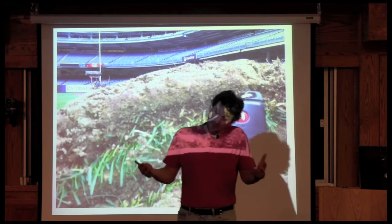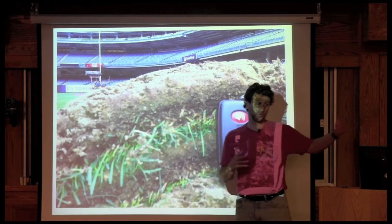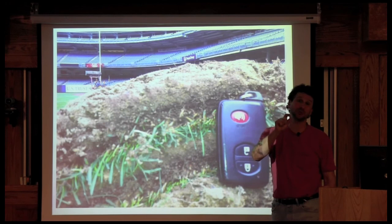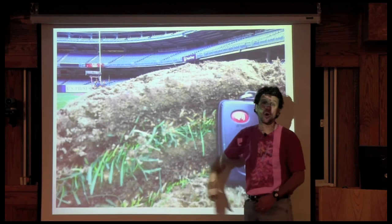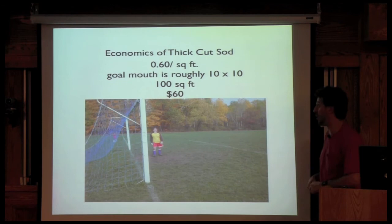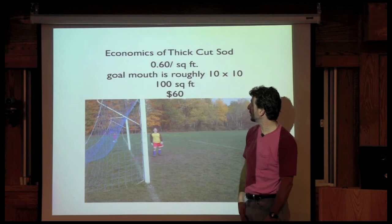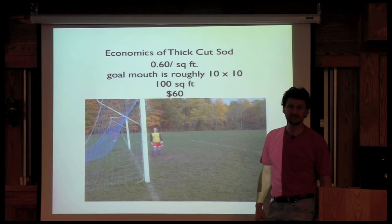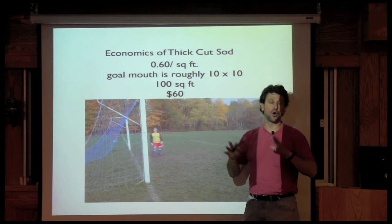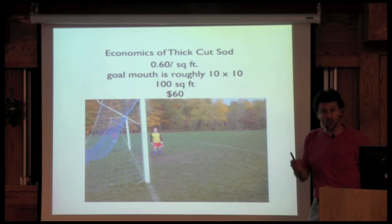Another way to get a safe field quickly — what professional athletes do — is the installation of thick-cut sod. Normally sod is cut between a half and three-quarters of an inch, but here you're talking about an inch and a half to two inches of soil underneath, making it very heavy so you can play on it immediately. Thick-cut sod is roughly 60 cents per square foot; a goal mouth area of about 100 square feet would cost around $60. Many people have started to consider this because having grass is the key first step to making a field safer.